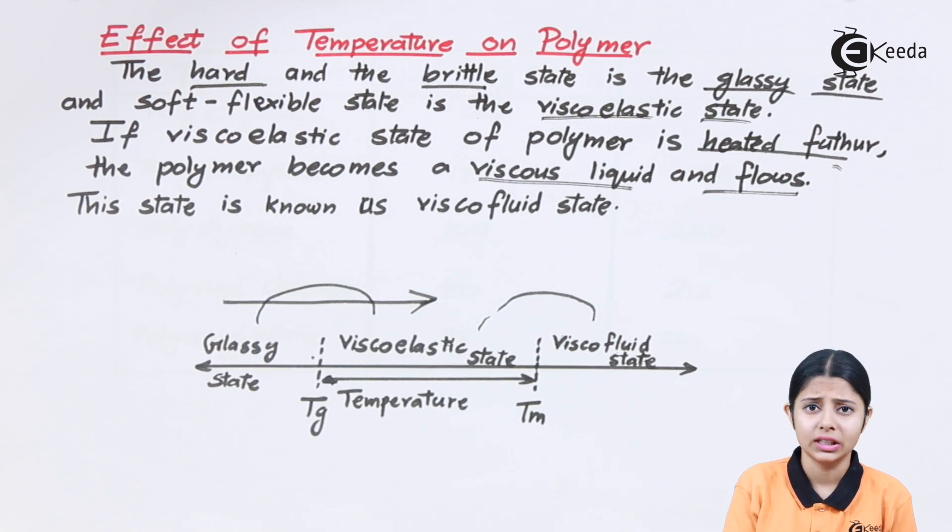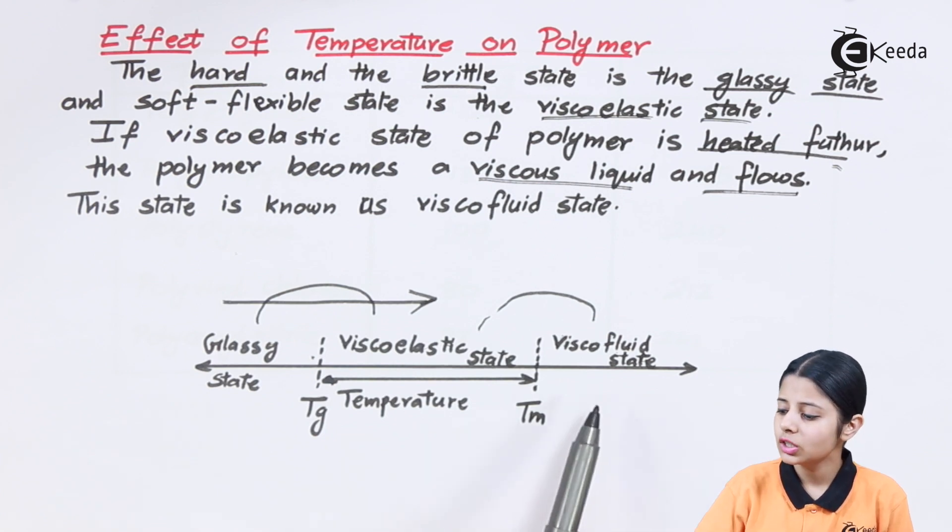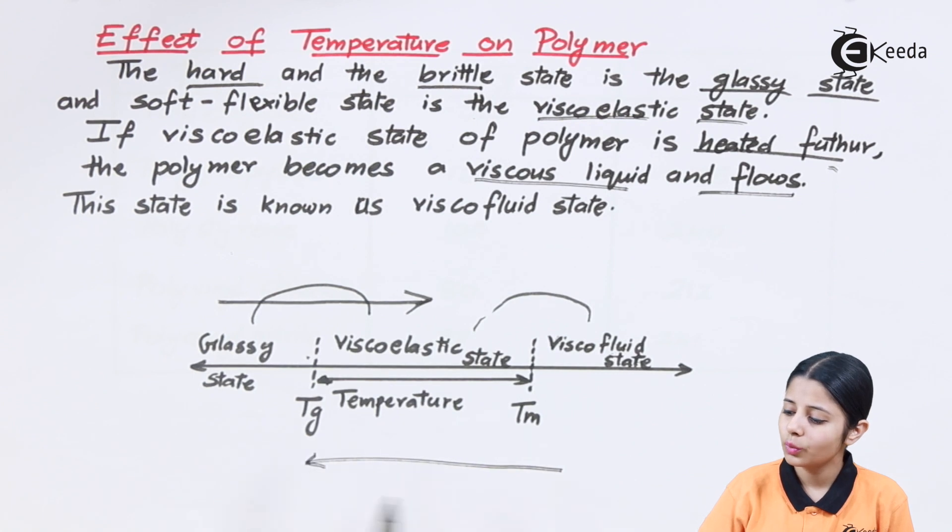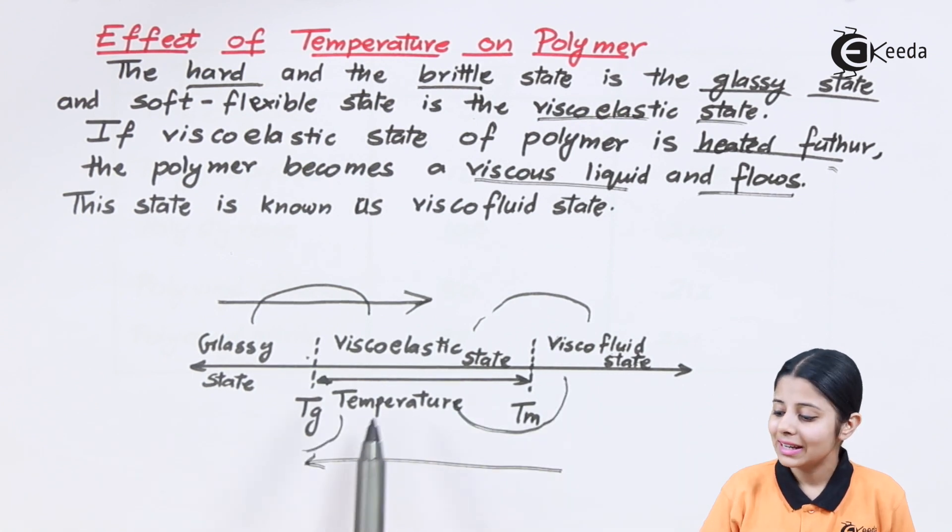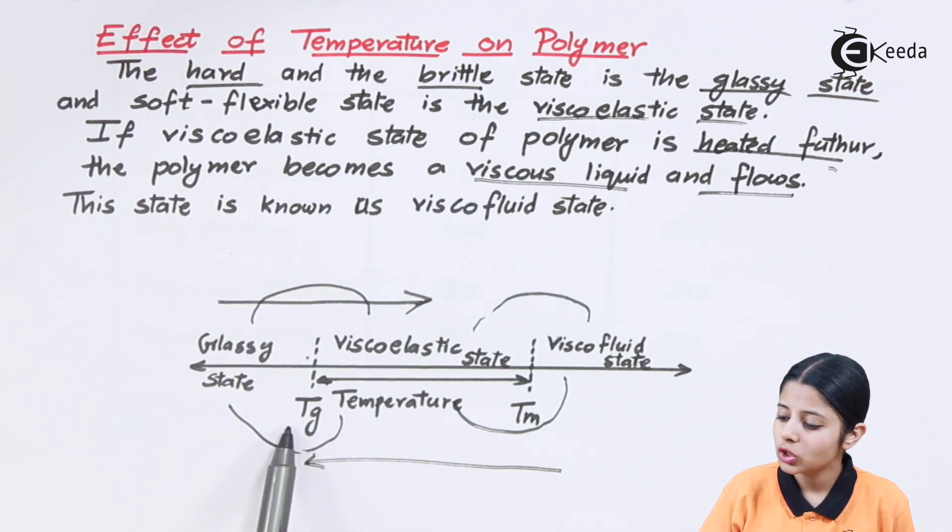Whenever you are removing heat, removal of heat will change from this end to this end. When viscoelastic state is further cooled down, it becomes glassy state. Over here I have two temperatures.